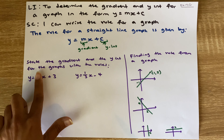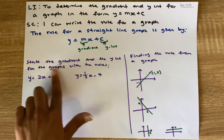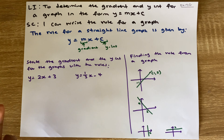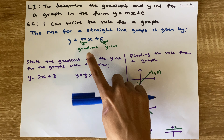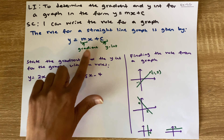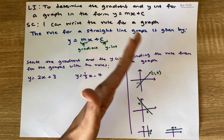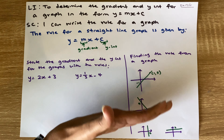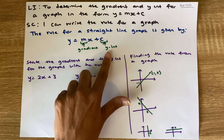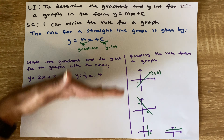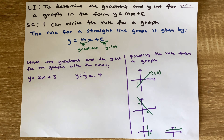So if we are given a formula, we need to be able to identify what the gradient will be. Remember, gradient is the slope of the graph — how steep our straight line graph is — and the y-intercept is where our graph cuts the y-axis.